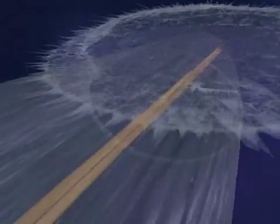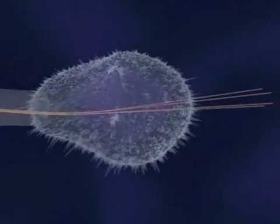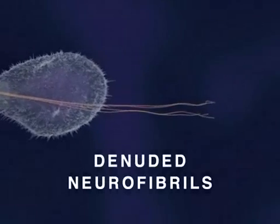Ultimately, both the developing neurite and its growth cone collapse, and some denuded neurofibrils form aggregates, or tangles, as depicted here.